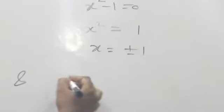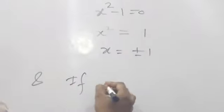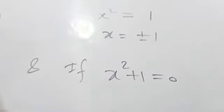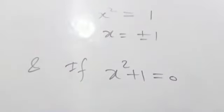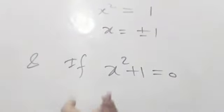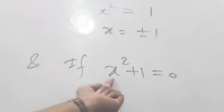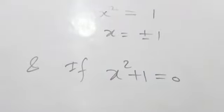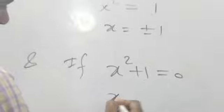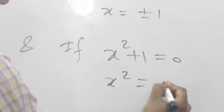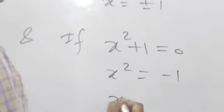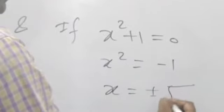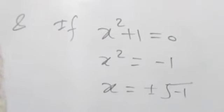And if x² + 1 = 0, then how we can find the roots of this quadratic equation? That means x² = -1, then x = ±√(-1).